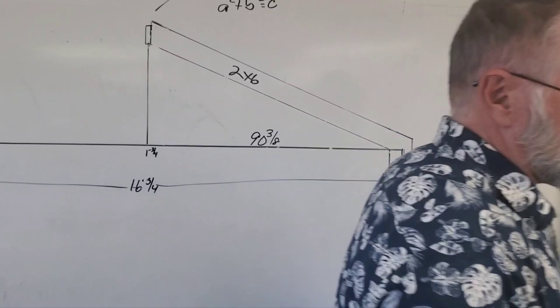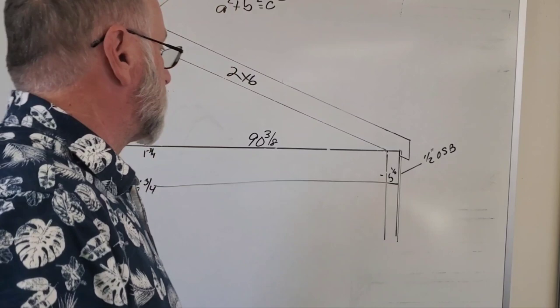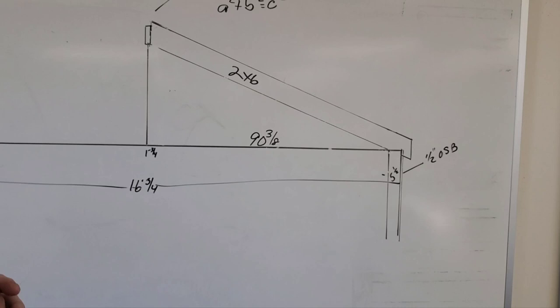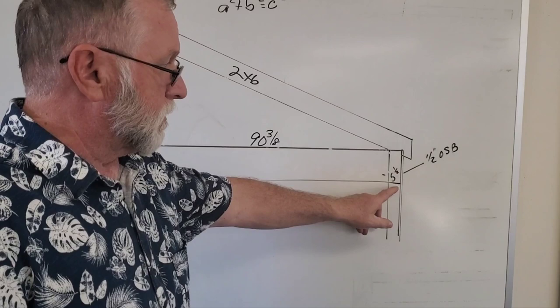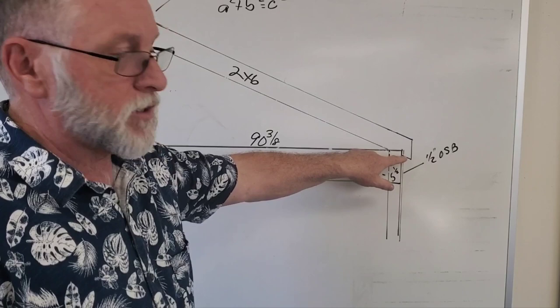So in case any of you are wondering how to figure out the length of a rafter, I'm building an addition on my house. This addition is 16 foot 3/4 of an inch wide, that's framing to framing. I have half inch OSB on there too, but I'm not going to consider the thickness of that because my OSB doesn't go this high, so this is going to go right up against the bare framing.